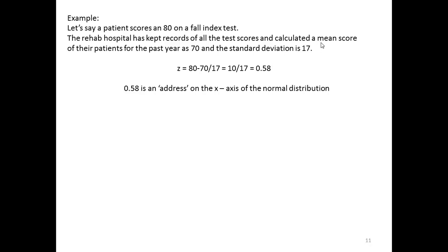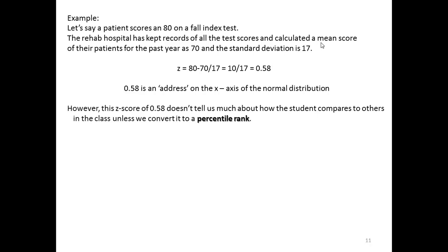We can calculate the Z-score by taking that individual score, subtracting the mean and dividing it by the standard deviation. And we get a Z-score of .58. So if you think about that normal curve, .58 is an address on the x-axis of the normal distribution. But that score doesn't really tell us anything about how the student, or in this case the patient, compares to others in the class or in that sample in the hospital unless we convert it to a percentile rank.